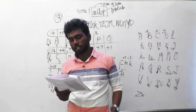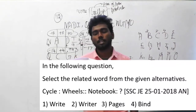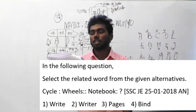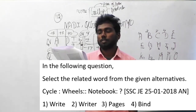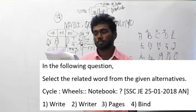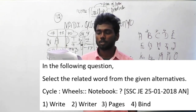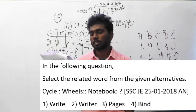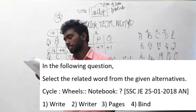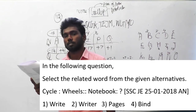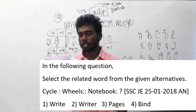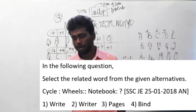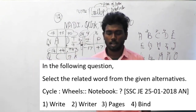The 130th question is next. This question was asked on 25th January 2018, afternoon session. In the following question, select the related word from the given alternatives. The question is: title is to wheels implies notebook is to question mark. The options are write, writer, pages, and bind.